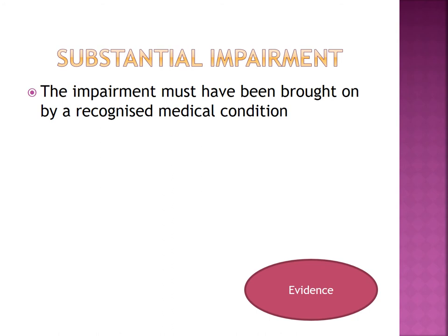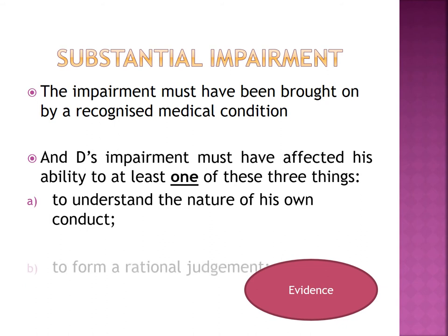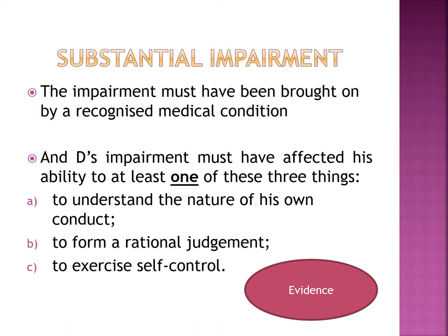Substantial impairment is going to be based on the facts. The impairment must be linked to or brought on by the recognised medical condition, and at least one of the required elements needs to be satisfied. At the time, could they understand what they were doing? If they were blacking out or sleepwalking, then no. Could they exercise self-control? If they went into a fit of rage, paranoia, or schizophrenia, then no. Could they form a rational judgment? Link the condition with what you believe was affected, and only one needs to be proven. Then link the condition to the killing as final evidence.